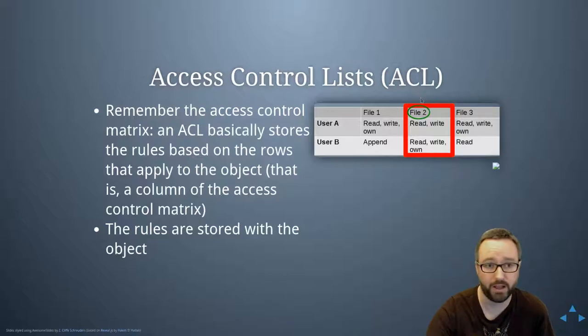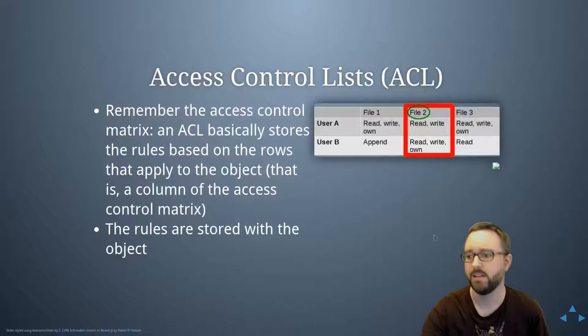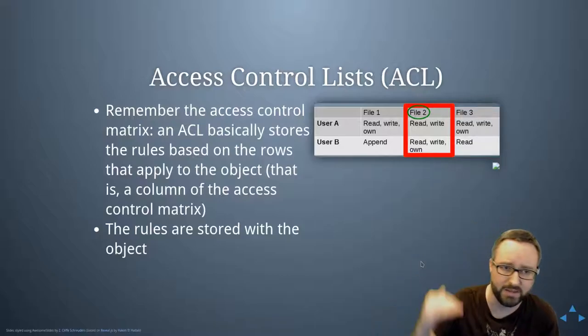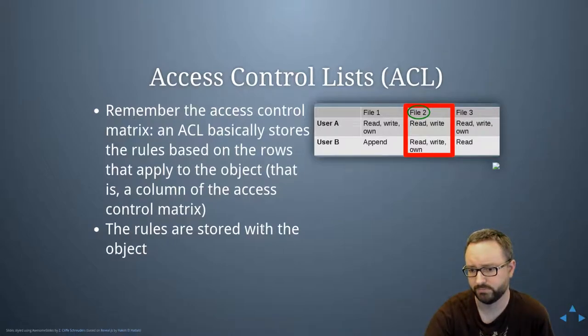On file two in this example you would attach a list that said user A can read and write it and user B can read, write and own it. You would take that information and attach it to file two. If there were blank cells in that huge list, the users that aren't allowed any access wouldn't appear in the ACL for that file. You just define positive permissions usually, and you store the rules with the object.